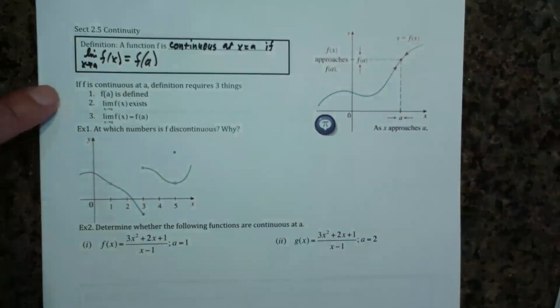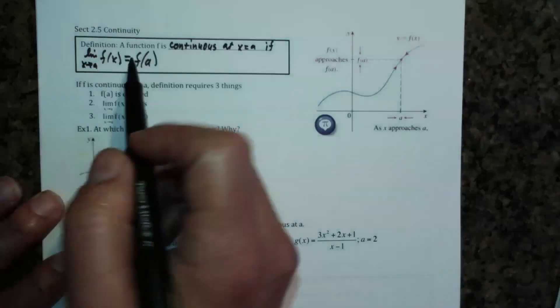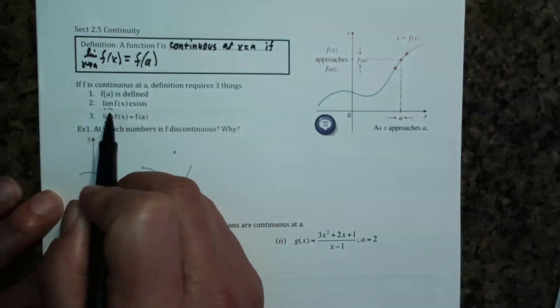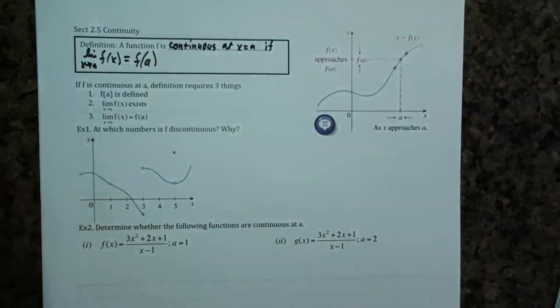Three things we need to have. One: F(a) is defined — meaning we can find F(a); if that's not defined, it's not continuous there. Two: the limit as x approaches a of F(x) exists — if this limit goes off to infinity or gives different values from each side, it's not continuous there. Three: that limit equals F(a), which is defined.